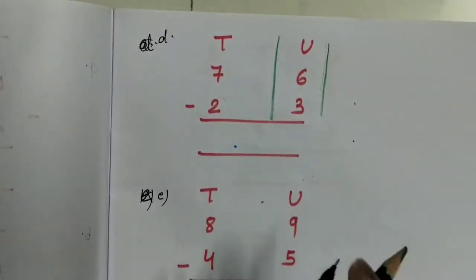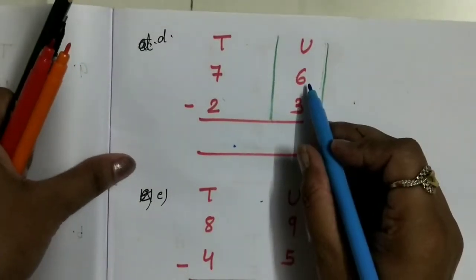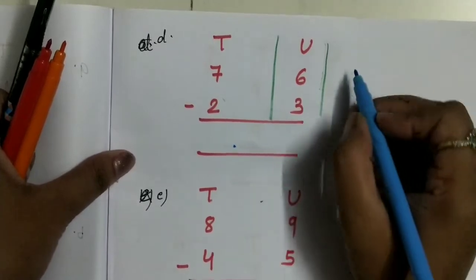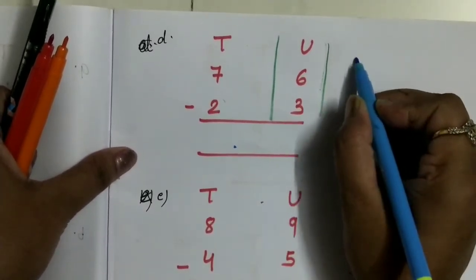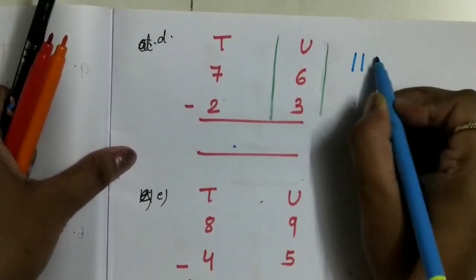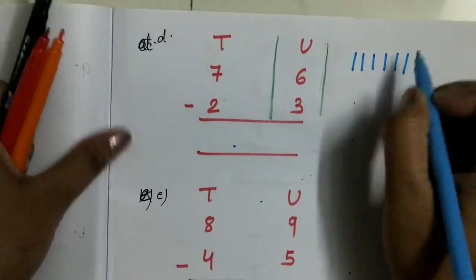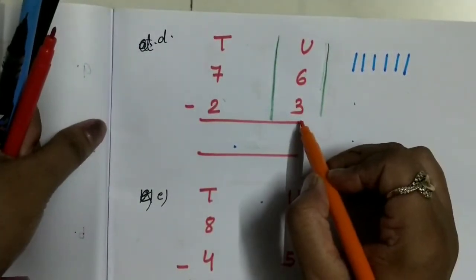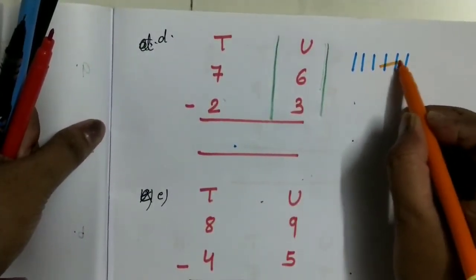Here this one will be known as the unit column and this one will be the tens column. For subtraction of the units column here we have 6 minus 3, so you have to draw 6 lines: 1, 2, 3, 4, 5, 6. From 6 lines you have to take away 3: 1, 2, 3. Take away.